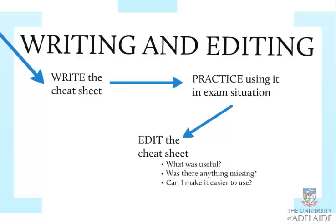Then edit your cheat sheet. Ask yourself: what was useful? Was there anything missing — new things you couldn't remember that weren't on there yet? Those should be added. Can you make it easier to use? If you knew something was on the cheat sheet but couldn't find it, maybe reorganise the layout. If you couldn't tell where one formula ended and the next began, add more space. You can rewrite your cheat sheet and practice again as many times as you like. This process gives you an opportunity to practice exams using your cheat sheet as a tool.